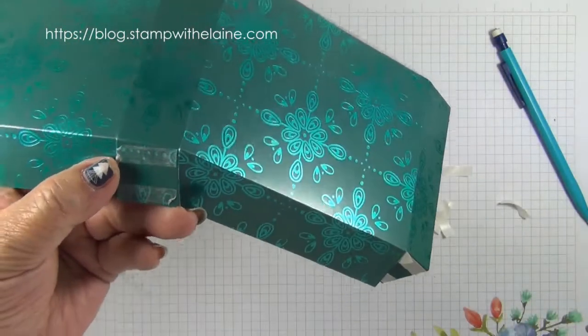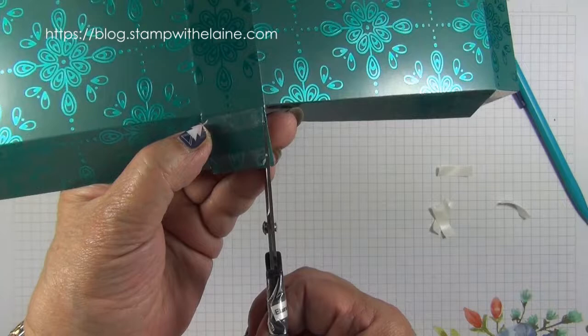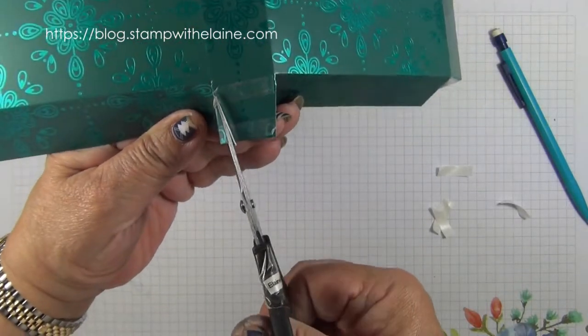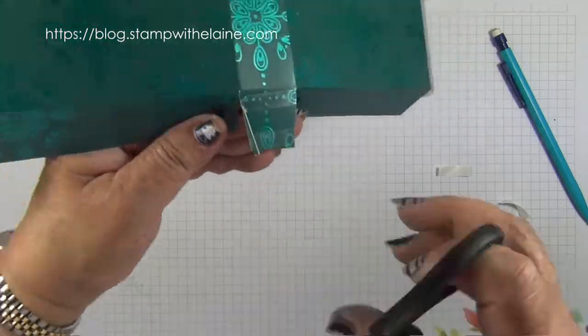Cut a slight wedge on each of them so that it closes better. So take a slight v-shape from each tab.